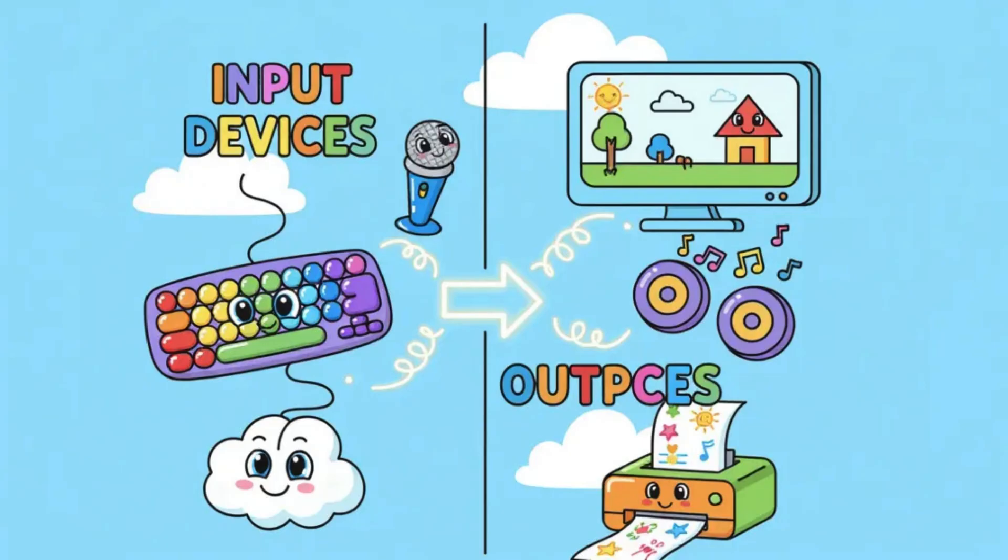Now let us move on to output devices. While input devices help us send information to the computer, output devices do the opposite. They are the tools that the computer uses to send information back to us. After we give a command or instruction, the computer processes it, and then shows us the result through output devices.